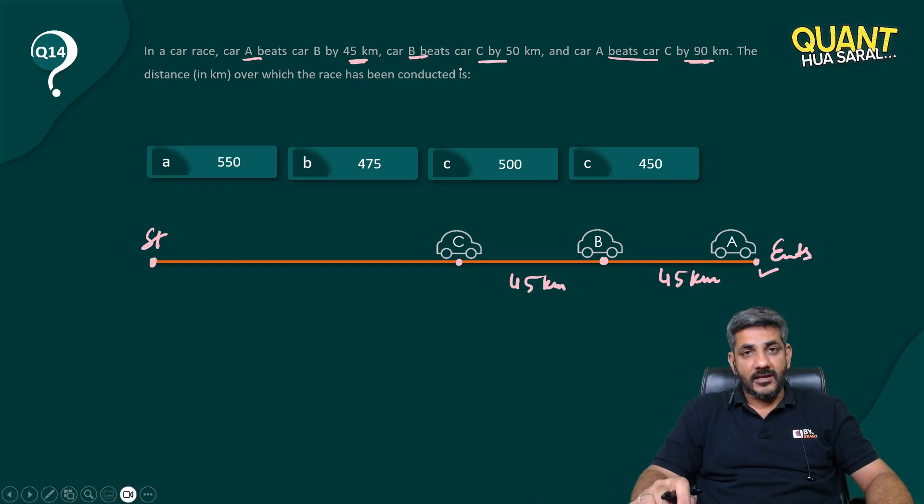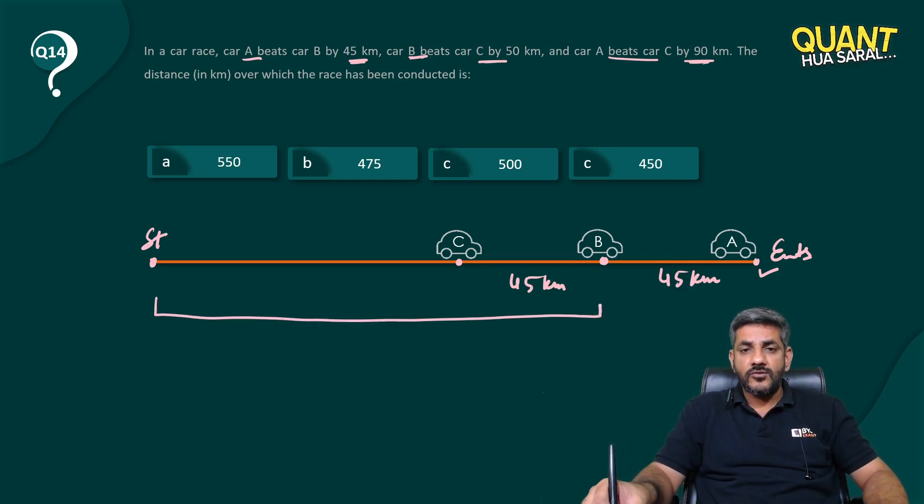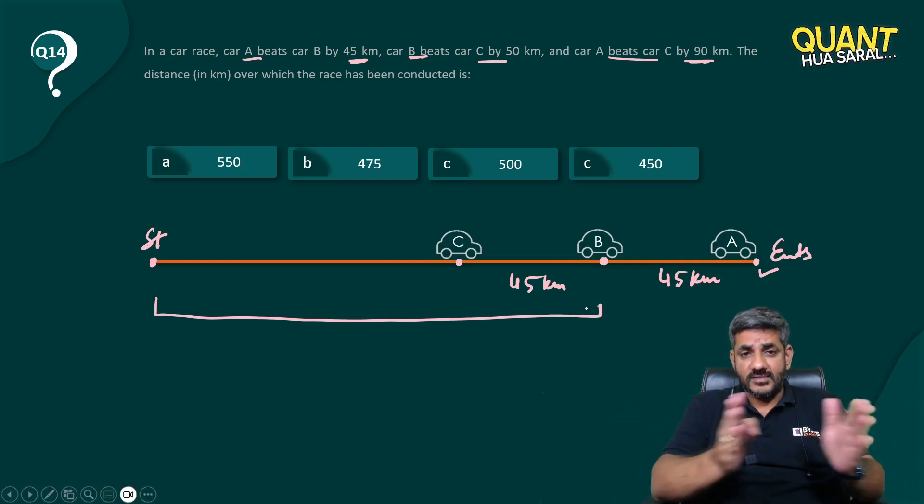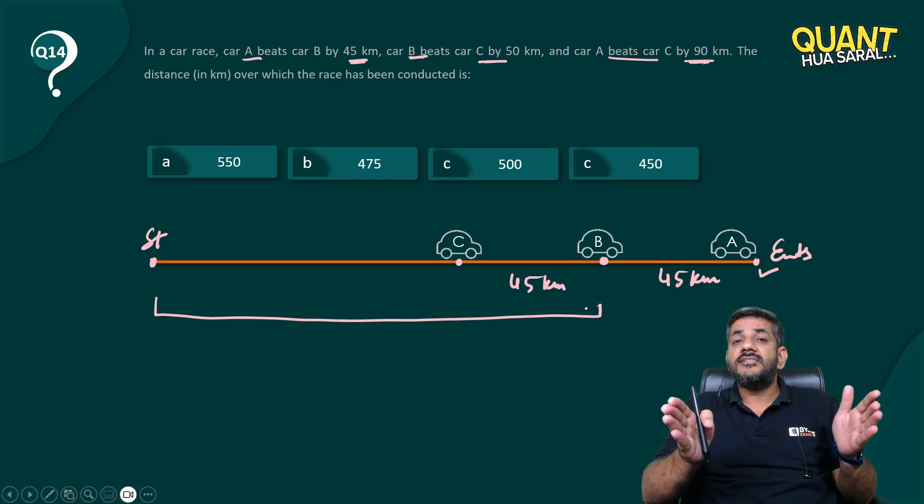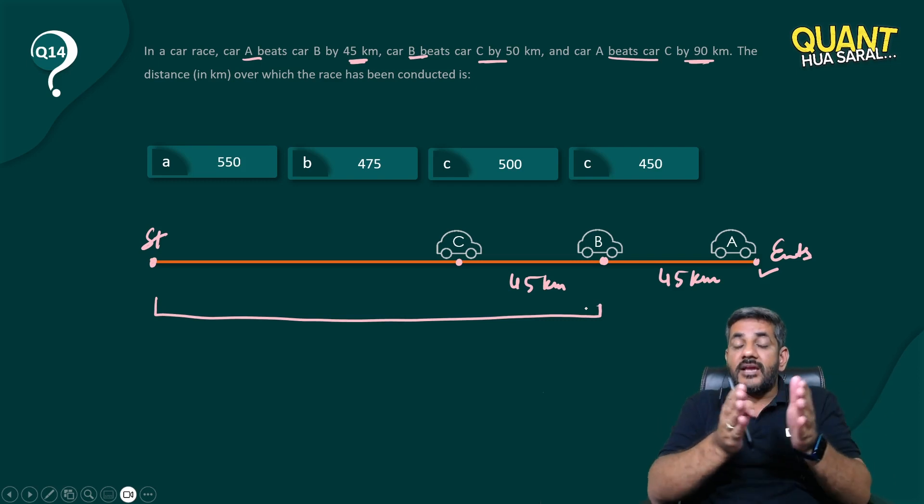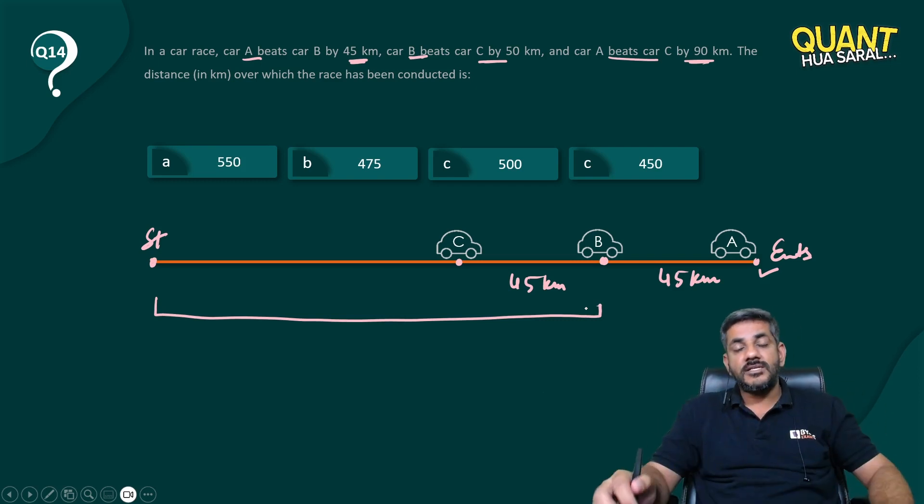Now car B and C, they are currently at a gap of 45 kilometers, and to create this gap of 45 kilometers, of course B had to run this whole distance that I showed you on the screen - this whole line, right? This is the distance traveled by B to take a lead of 45 kilometers over car C.